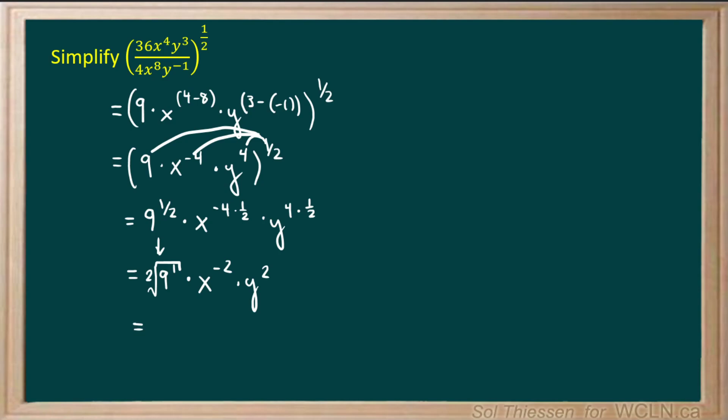The square root of 9 is 3. The negative exponent on the x variable means that the x variable will end up in the denominator of our expression. So the negative means that we take the reciprocal of our argument. So that would be 1 over x, and 1 over x squared is going to look like this when we multiply it by 3.